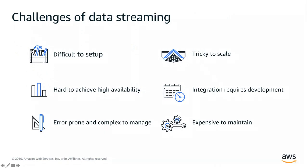What are the challenges with streaming technologies today? They are very difficult to set up. Any system that needs to scale to millions of data points processed per second requires a huge number of servers, technologies, tools, and monitoring. The second challenge is high availability — streaming data must be near real-time and react in sub-milliseconds, available 24/7. Even a one-minute downtime means losing critical data points. When a system is difficult to set up and requires high availability, it becomes error-prone and very complex to manage.